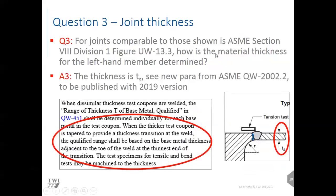The new paragraph in the 2019 ASME Section 9 edition states that when a thicker component tapered down to a certain thickness is welded to a thinner component, the base metal thickness is the thickness at the toe of the weld. Our answer is that the thickness is Ts, regardless of whether the dimension R is larger or smaller — that is, regardless of how close the joint is to the thicker component.